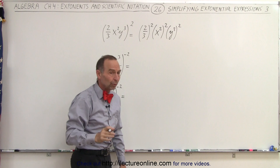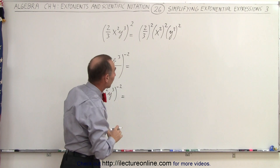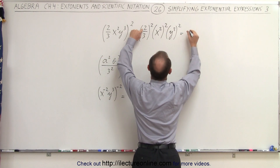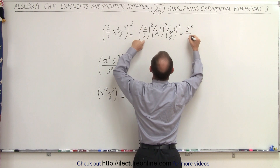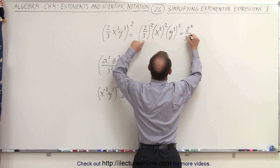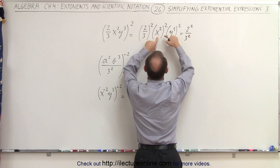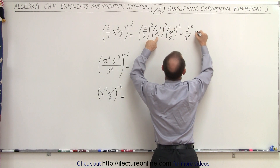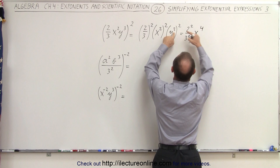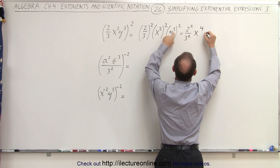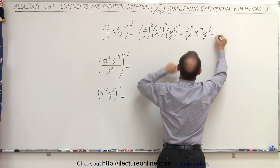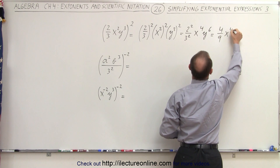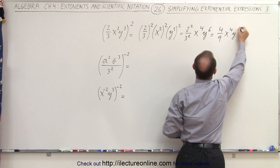The same rule applies as before. We can write this as 2 to the second power divided by 3 to the second power. Here we have an exponent raised to an exponent — we multiply exponents, so this becomes x to the fourth. And here again, multiplying exponents gives y to the sixth, which equals 4 over 9, x to the fourth, y to the sixth.